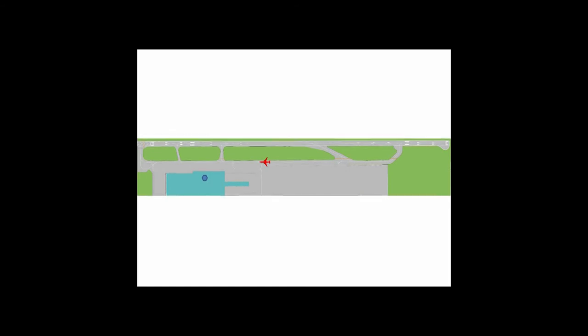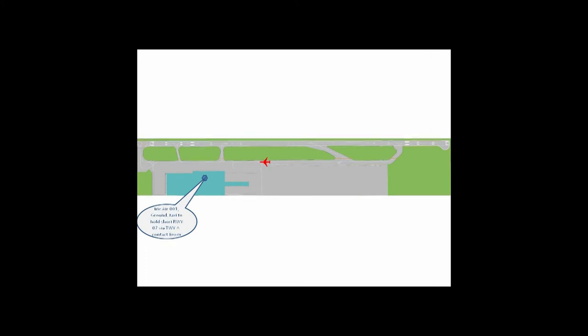The marshaler is the one who gives the pilot permission to start moving the aircraft. In the apron area, the marshaler has jurisdiction, but the pilot still has to request permission to enter the maneuvering area. Once the aircraft is in the maneuvering area, that's the jurisdiction of the air controller. Ground: 'Iri Air 001, request taxi.' Ground: 'Iri Air 001, taxi to hold short runway 07 via taxiway Alpha, contact tower.' Pilot reads back and acknowledges.